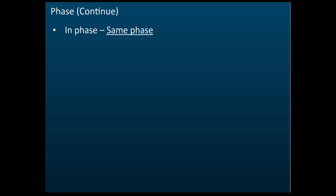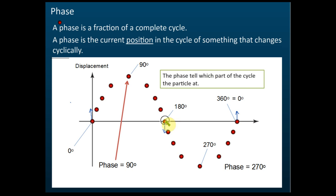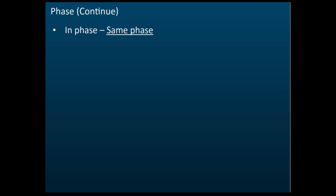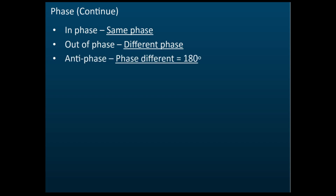The term 'in phase' means the same phase — the same position and the same direction of motion. For example, two points at the same position but moving in opposite directions are not in phase. If they are at the same position and moving in the same direction, they are in phase. If the phases are different, we say they are 'out of phase,' and if the phase difference is 180°, we say they are 'anti-phase.'